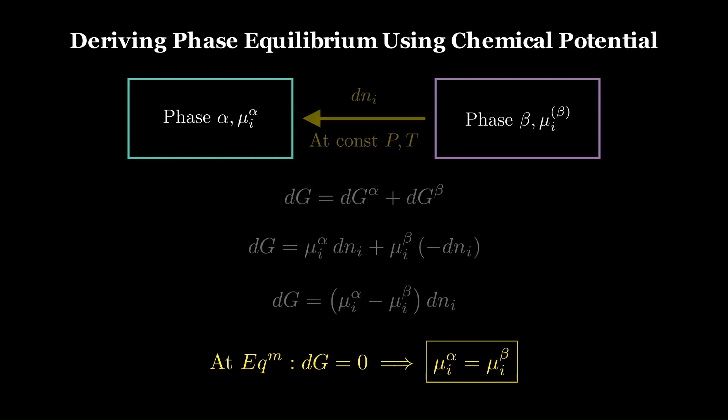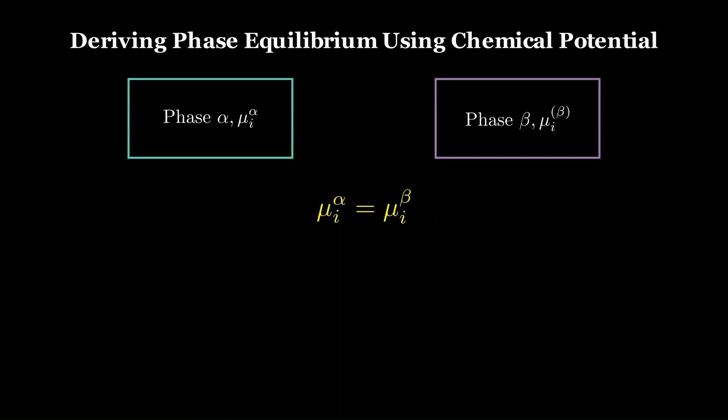Let's clear the board and keep only the result we derived by minimizing G at fixed temperature and pressure. Now let's bring back the fugacity condition for equilibrium. But remember, this equality of fugacities is by definition of phase equilibrium, whereas the equality of chemical potentials was derived from the Gibbs free energy argument. So, we can already see why chemical potential is conceptually more robust than fugacity.